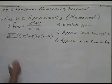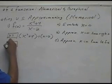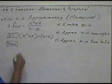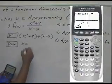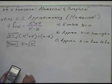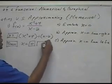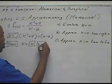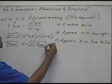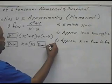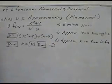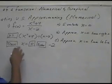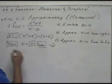Then press the Trace button. From the Trace button, input 0 and press Enter. Here we get y = -2, so the value for this function at x = 0 is -2. This was the evaluation of x = 0.